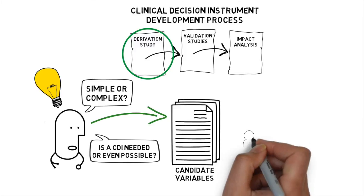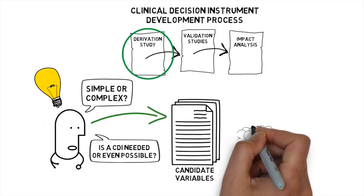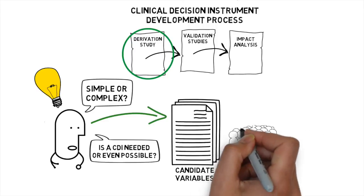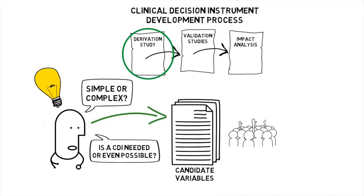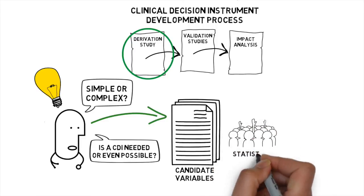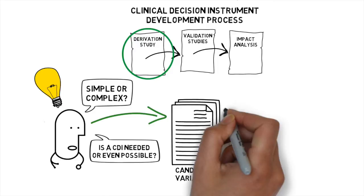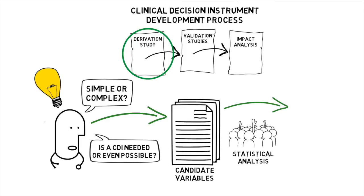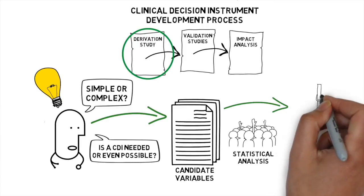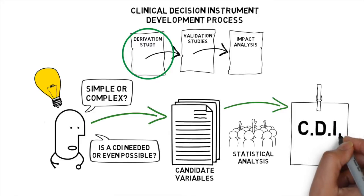The next step in a derivation study is to take these candidate variables, measure them in a population, and follow that population through to see how those different candidate variables line up with whatever outcome you're looking for. There are a number of statistical methods that allow us to pick out which variables seem to be most important. You can then use the data garnered from your derivation study to construct a clinical decision instrument that best predicts whatever prognostic or diagnostic outcomes you're looking for.